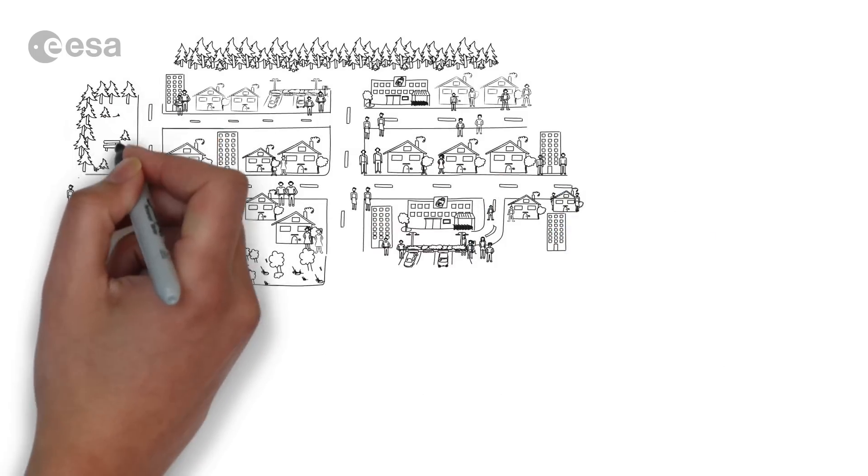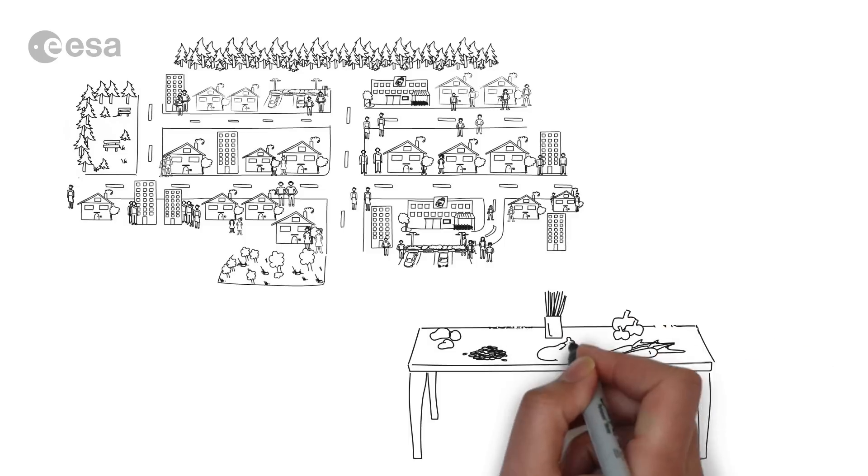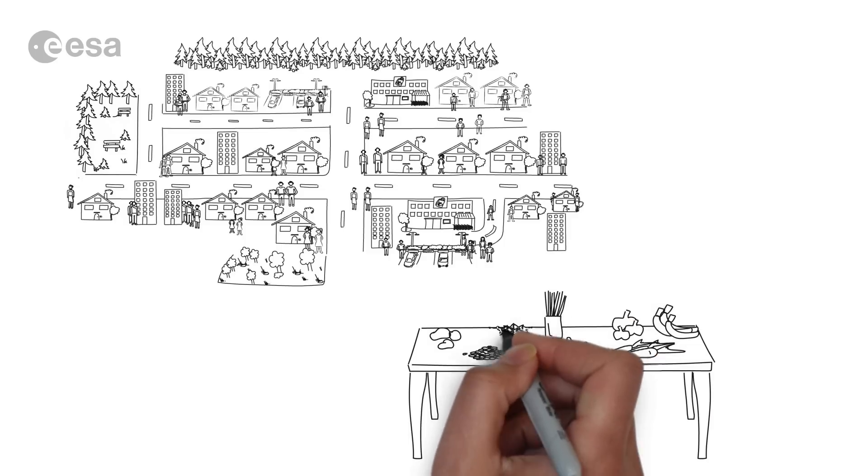Even more, a larger population will require more food on the table, be it rice, pasta or potatoes, vegetables, meat or fruit.